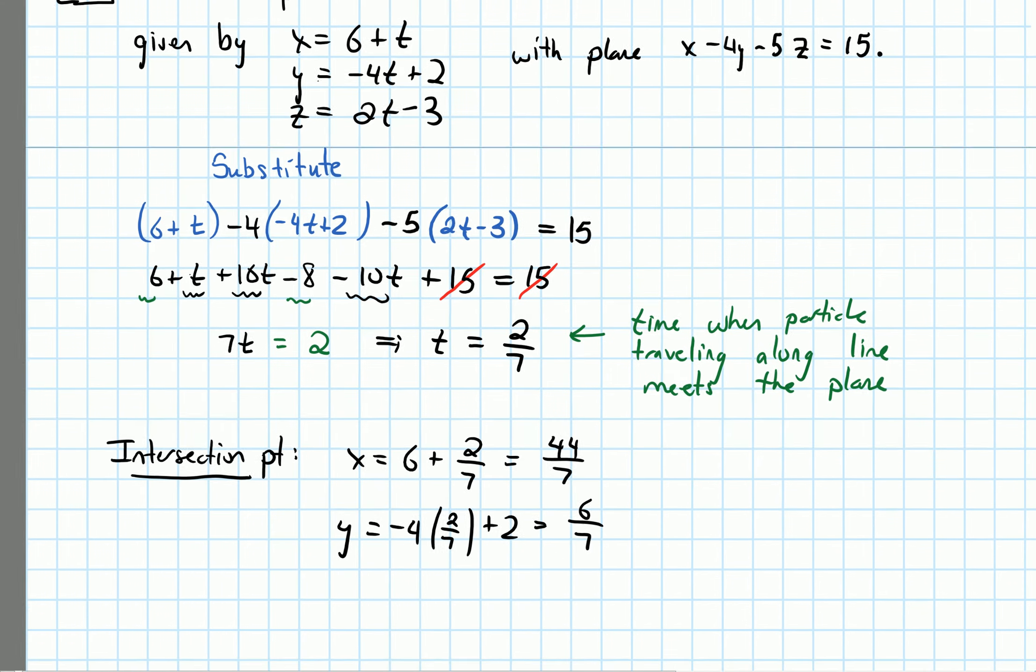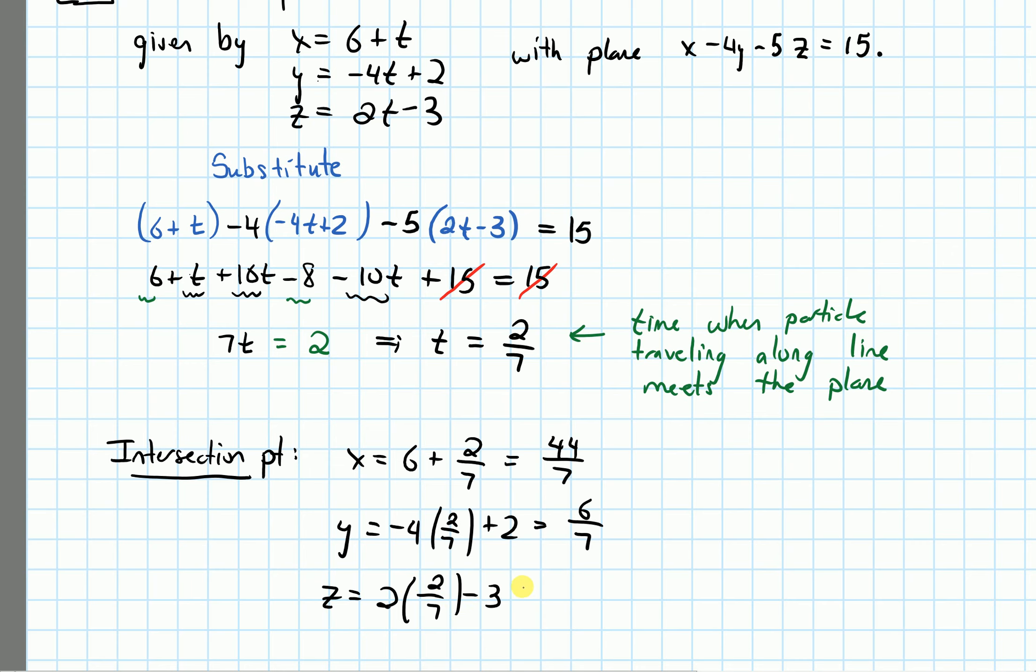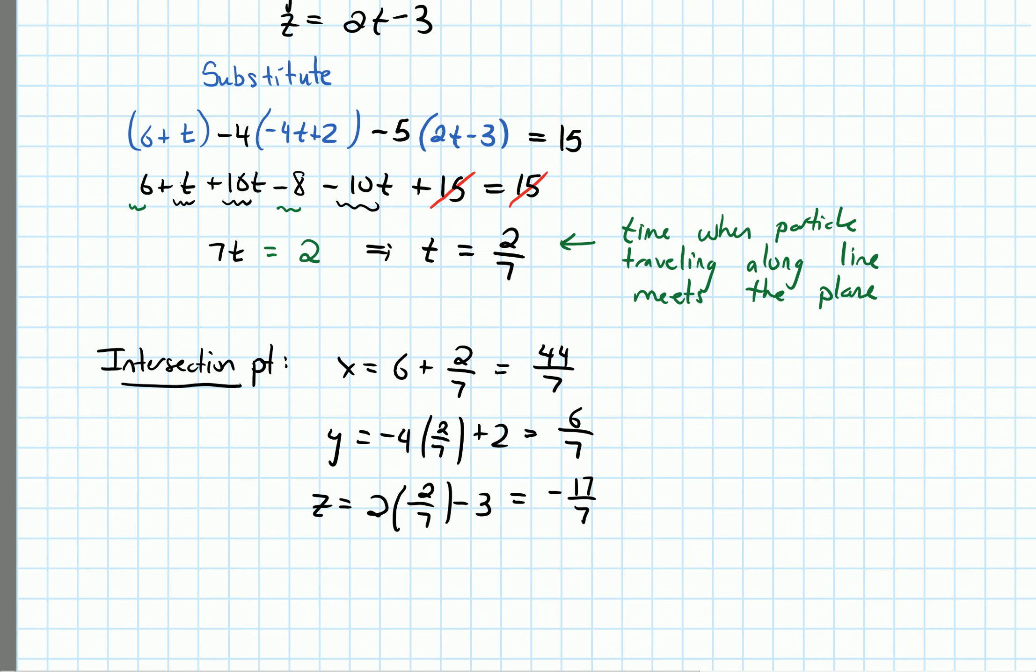And if we do the same thing now for z, z is 2 times 2/7 minus 3. Simplifying this, this is -17/7. So we have the x, the y, and the z coordinates.